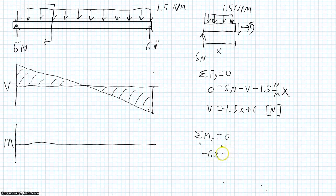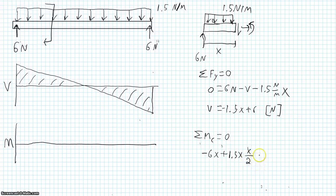We'll have our 1.5 newton per meter over x meters. And that's going to be acting halfway between x and the support. So x over 2. And then we also have our moment at the cut.